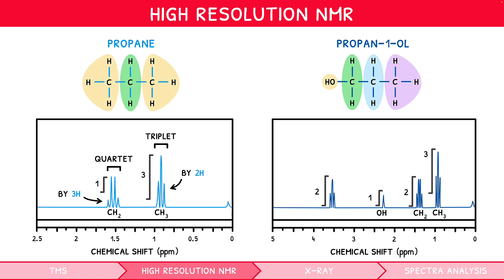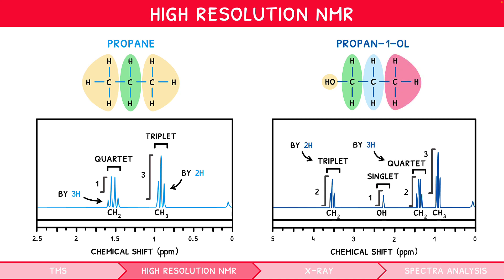The leftmost peak is the CH₂ adjacent to the OH. We can see the CH₂ peak adjacent to the OH has three split peaks, i.e. is a triplet, indicating its adjacent environment contains two protons — this fits, as it is adjacent to another CH₂. Furthermore, the OH peak is not split, i.e. is a singlet, indicating it represents a hydrogen bound to an oxygen or nitrogen. The other CH₂ peak has four split peaks, i.e. is a quartet, indicating its adjacent environment contains three protons — this fits, as it is adjacent to the CH₃. Finally, the CH₃ peak has three split peaks, i.e. is a triplet, indicating its adjacent environment contains two protons — this fits, as it is adjacent to a CH₂.